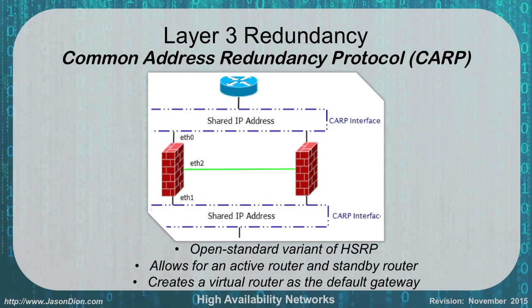Common Address Redundancy Protocol (CARP) is an open standard — an open way of doing what HSRP does. So if you have a non-Cisco device, this can be used by everybody. It allows for active-standby and still creates a virtual router, the same as HSRP but using an open standard instead of a Cisco proprietary one.